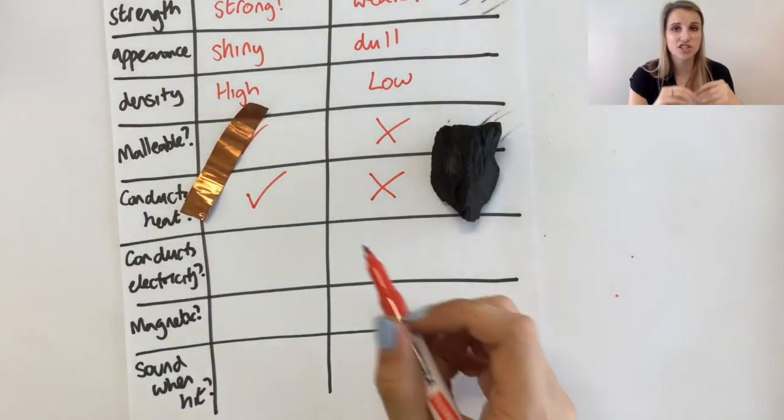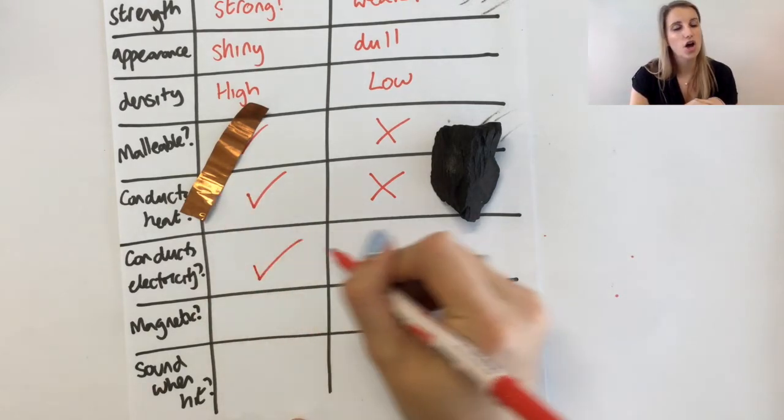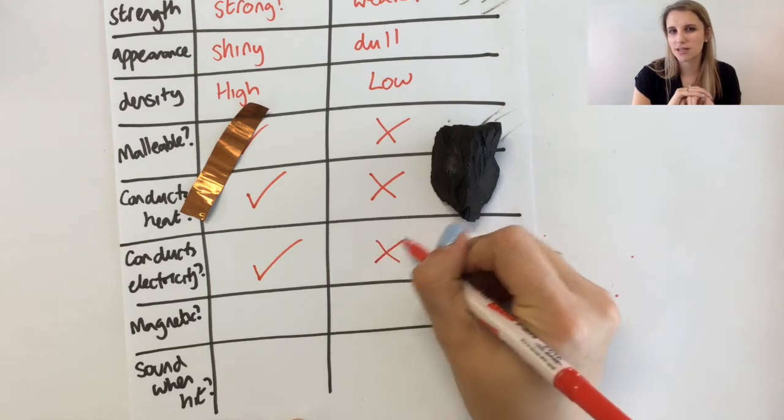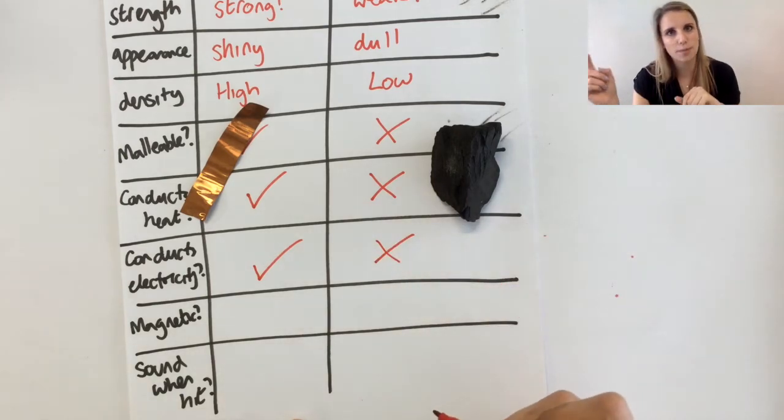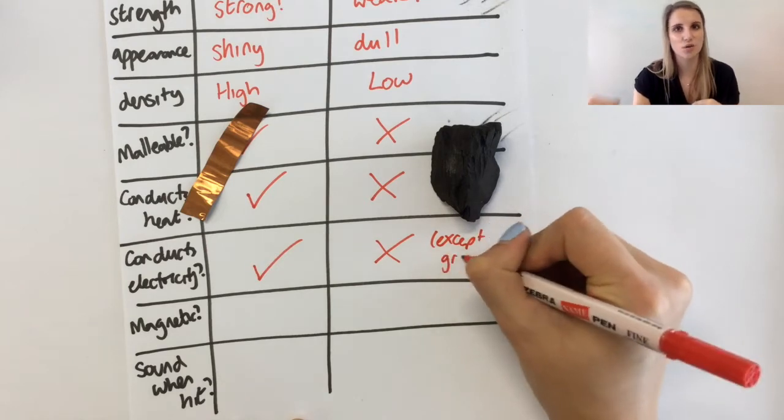The same thing applies to electricity. Metals are great at conducting electricity. Non-metals pretty much can't conduct electricity, unless you're talking about graphite, which is a special example because of its delocalised electrons.